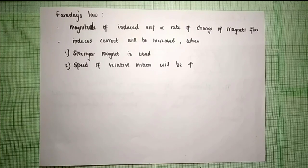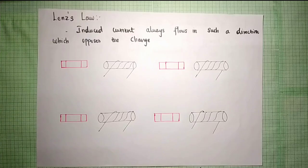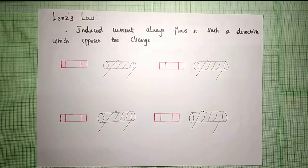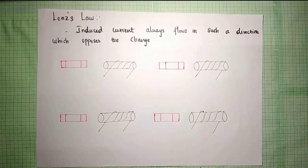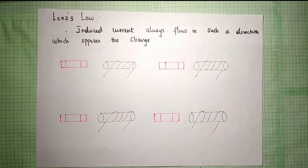This is what Faraday proposed. Lenz's law states that the induced current always flows in such a direction which opposes the change that caused it.